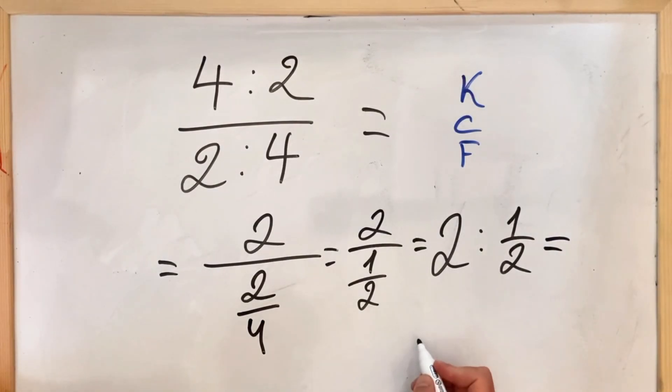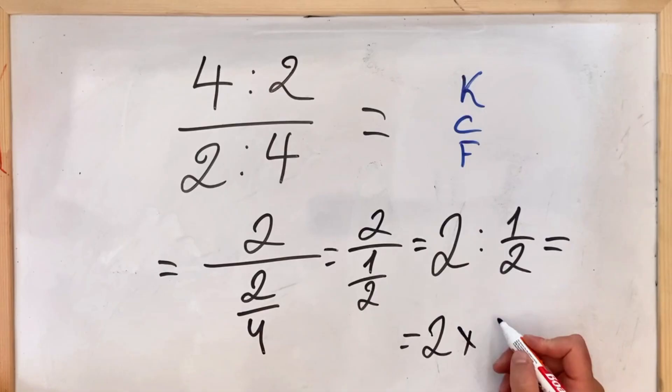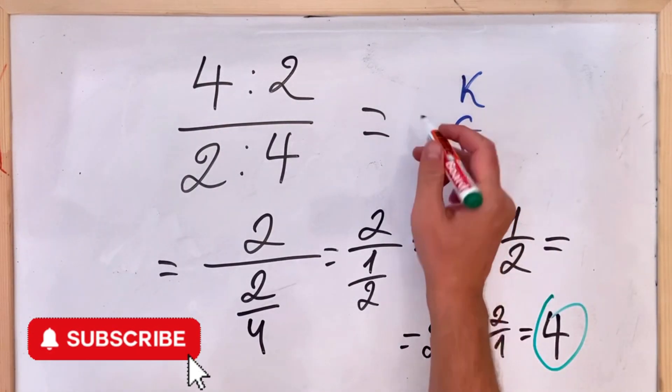In our situation we have: we keep the first, we change the sign, and we flip the second. So we have two over one, of course this is two, and we get four is the correct answer.